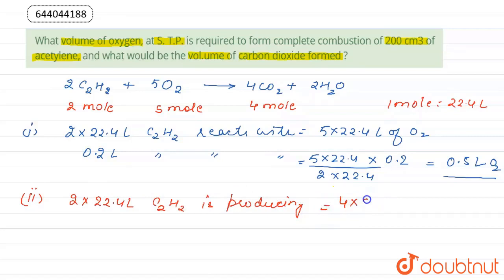4 into 22.4 liter of CO2. Then 0.2 liter of C2H2 would produce 4 multiplied by 22.4 liter divided by 2 into 22.4 liter multiplied by 0.2 liter, and by solving this, the volume of CO2 produced would be